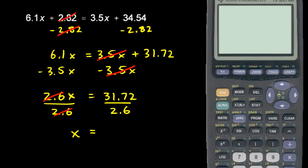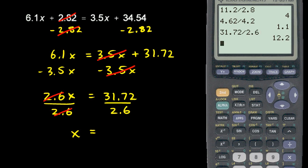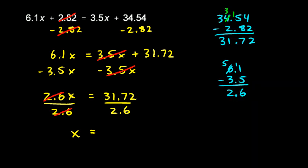and I'll pull up the calculator for that. 31.72 divided by 2.6, and that gives me 12.2. And that is my final answer.